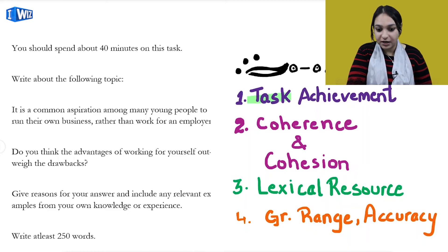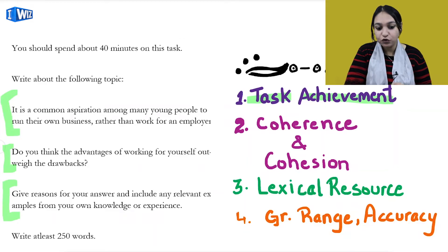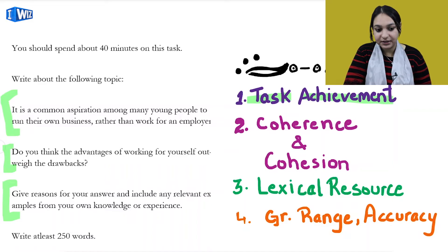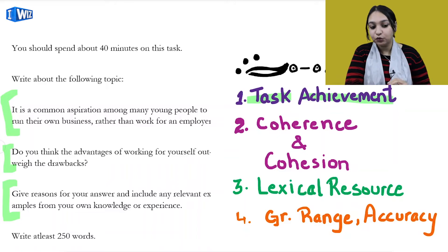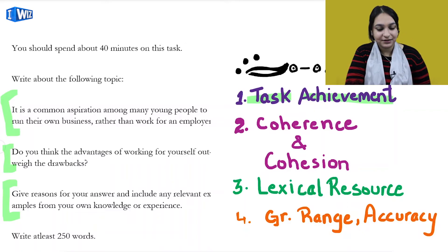First of all: Task Achievement. Task Achievement means whatever topic you have been given, you have to follow it and write your answer to it. In this particular essay, you are asked: 'Do you think the advantages of working for yourself outweigh the drawbacks?' and 'Give reasons for your answer and include any relevant examples from your own knowledge or experience.' When you answer these two things in the right way, you will have achieved your task and earn marks and bands.